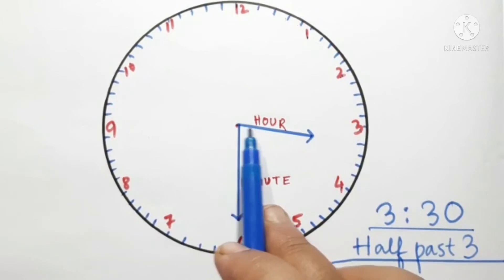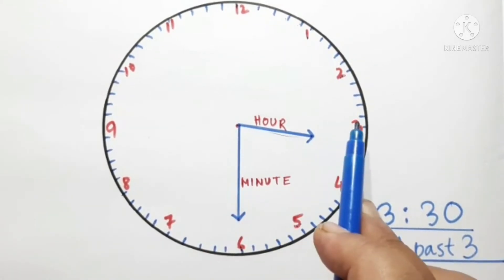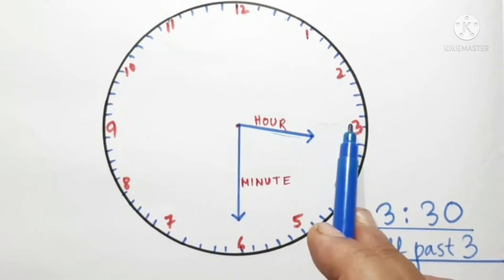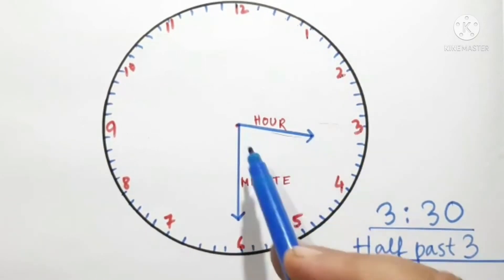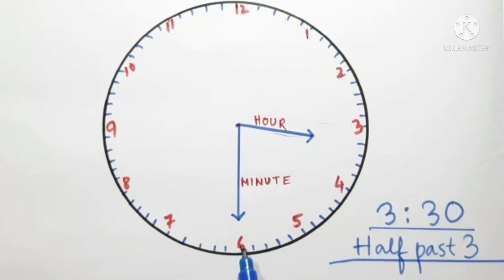Children, you can see here that our hand has crossed 3. It is not at 3, but it has crossed. And minute hand is at 6. Now, what does 6 represent? Let us know.